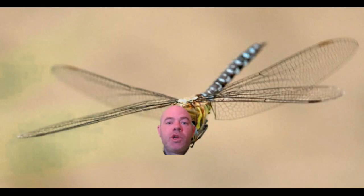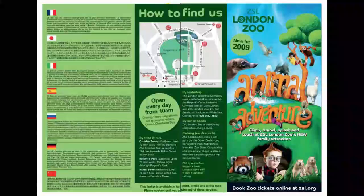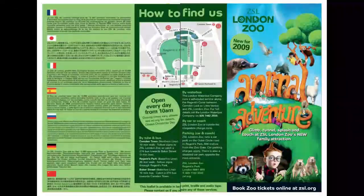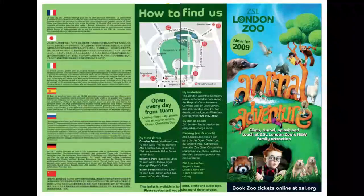But before we get on to the main task, we're going to go through and have a look at our leaflet again. The text we're going to look at today is an advertising pamphlet type thing that is advertising London Zoo.